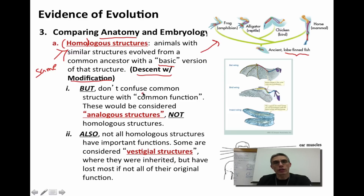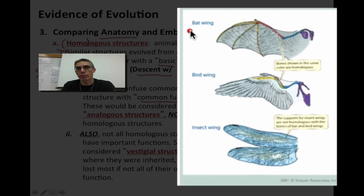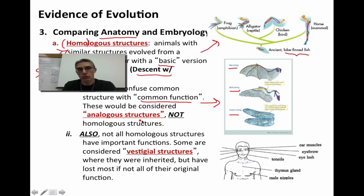You need to be careful not to confuse common structure with common function. For example, a bat wing, a bird wing, and an insect wing all allow the animal to fly, but they are not considered homologous because the structures making up these three appendages are not the same — the color coding, or bone arrangement, is not the same. We call these analogous structures. They all do the same thing but come from much more distantly related organisms.